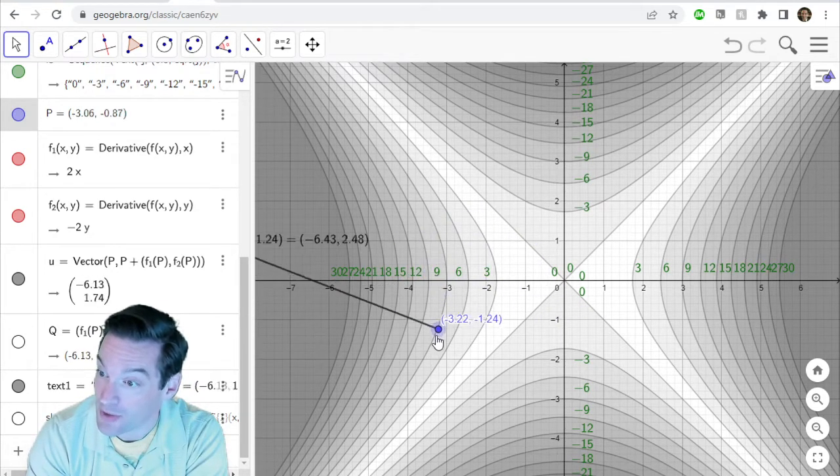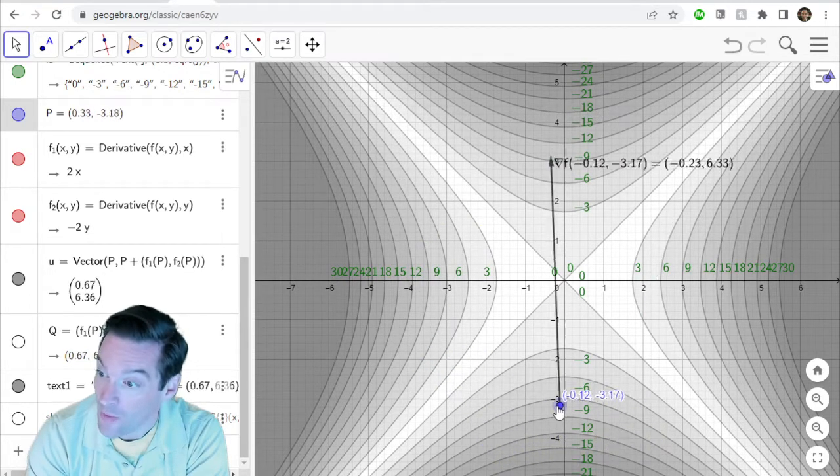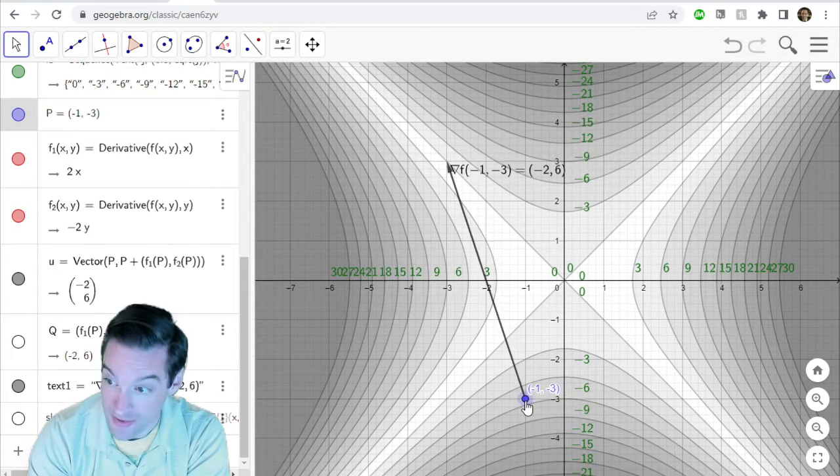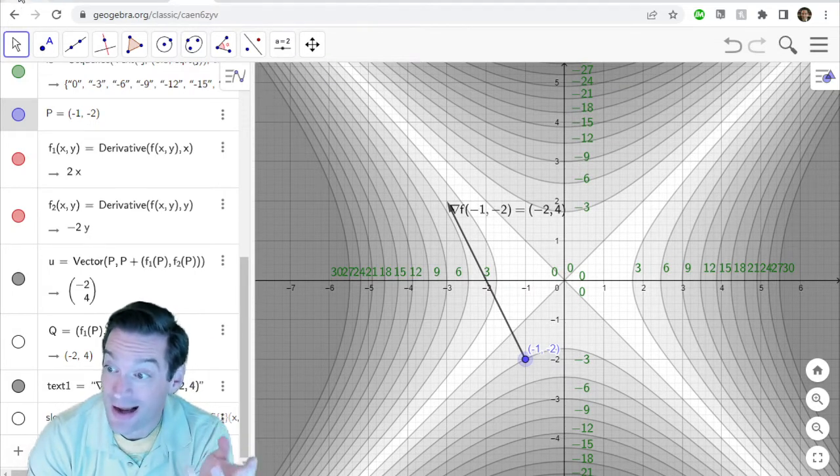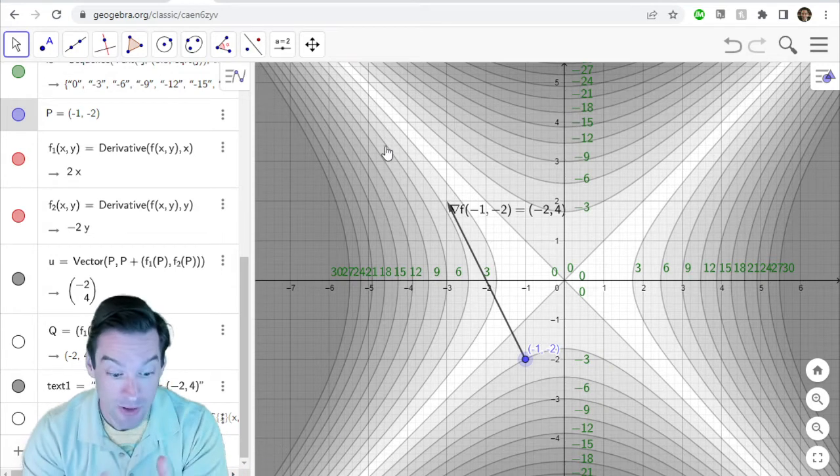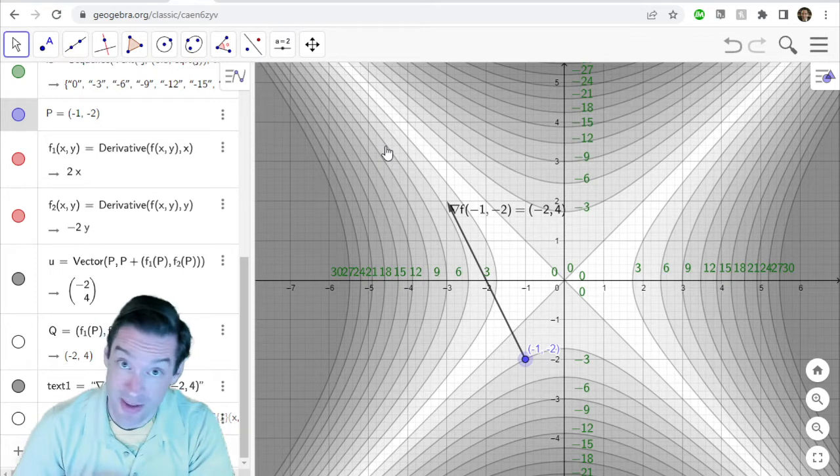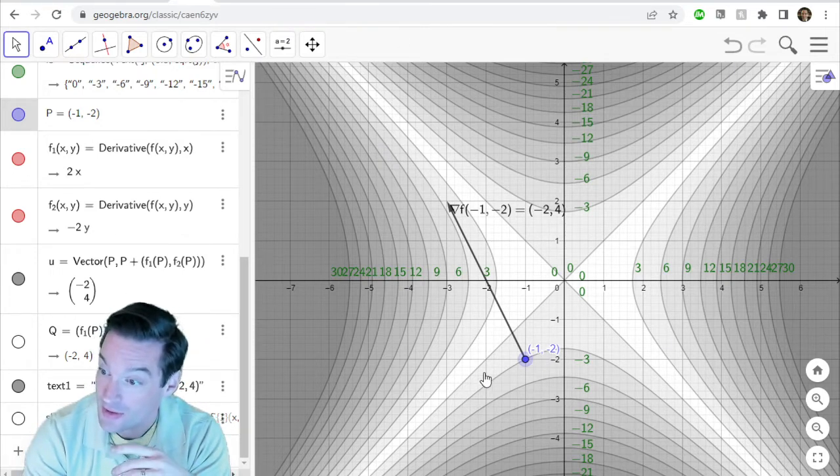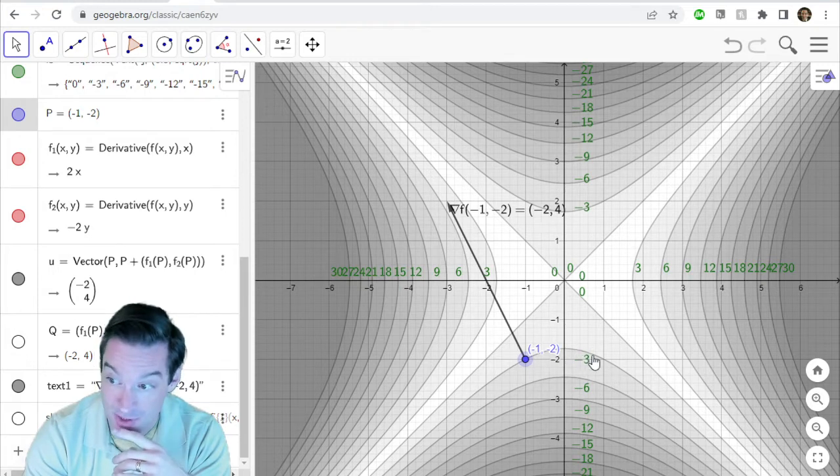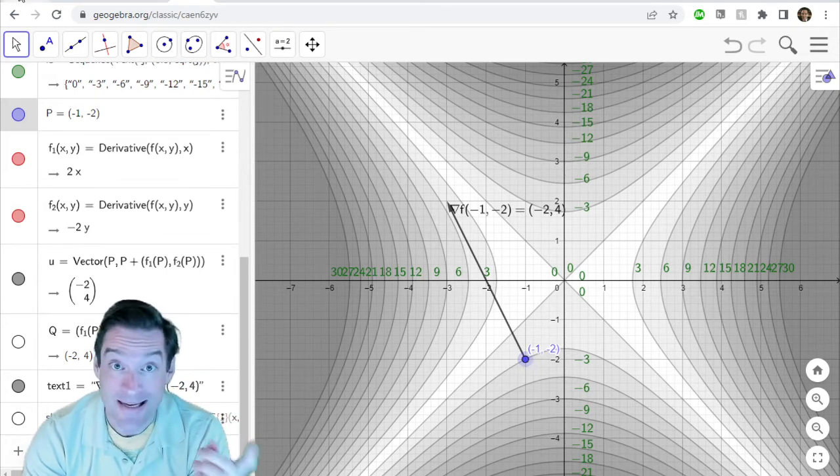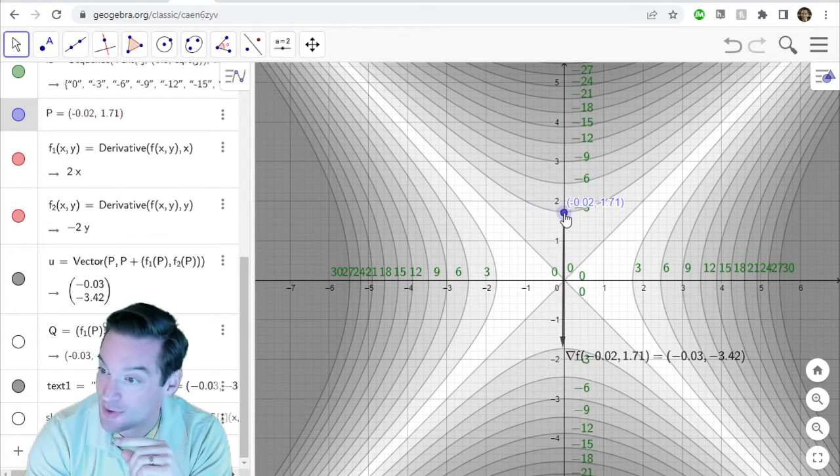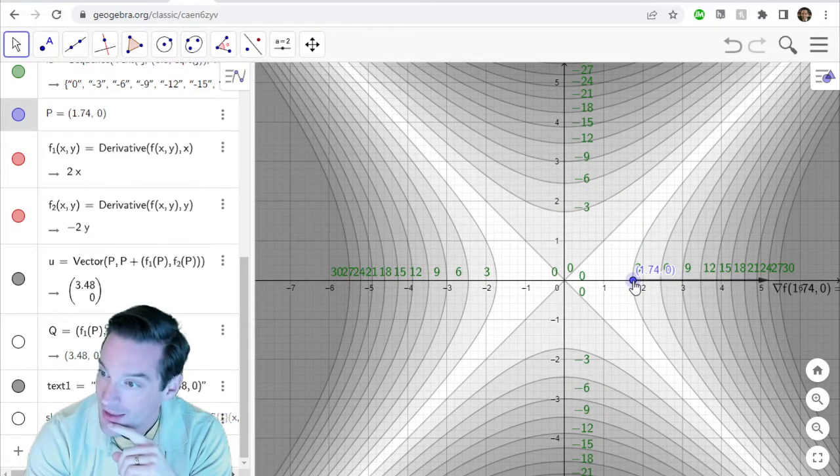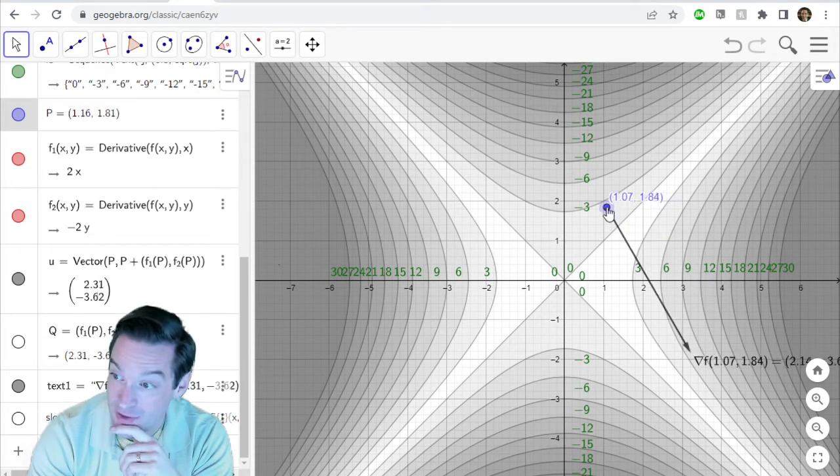So as you move this point around to various locations in the xy plane, what you end up noticing is kind of two things. The first thing that you were asked to notice is what relationship the gradient vector has to the contours. So the curves in this example, where the value of our function f of x and y is constant. Remember, that's what contours mean. Everywhere along this curve-shaped line here, the value of f of x and y is the same. In particular, it's equal to negative 3 in this example. And the gradient seems to point in a direction, as you said, that's perpendicular to each contour. Whatever contour my point is on, the gradient is going to be pointing in a direction that is perpendicular to that contour.